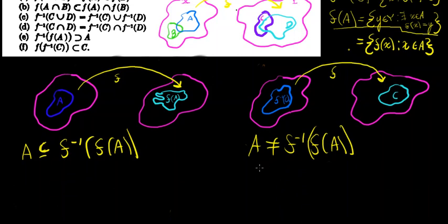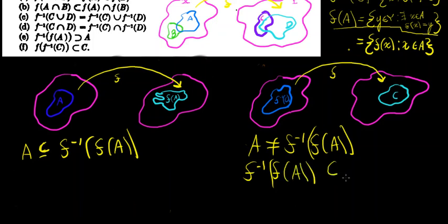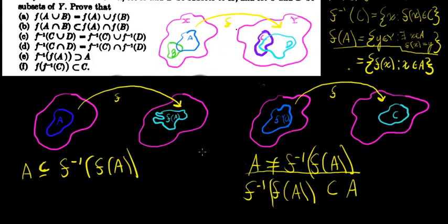In other words, I'm going to show that the inverse image of the image of A is not a subset of A. Because we're showing A ⊆ f⁻¹(f(A)), but I'm going to show that f⁻¹(f(A)) is not a subset of A, therefore that these two sets aren't equal. But first, let's show what they asked us to show.